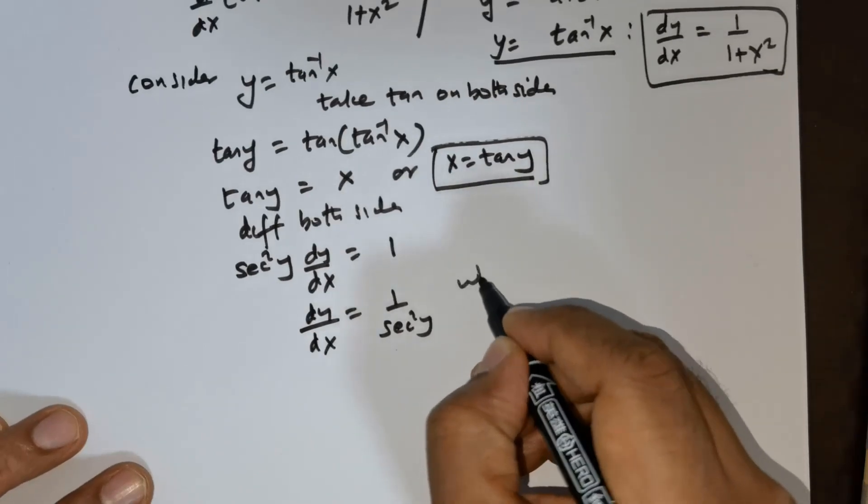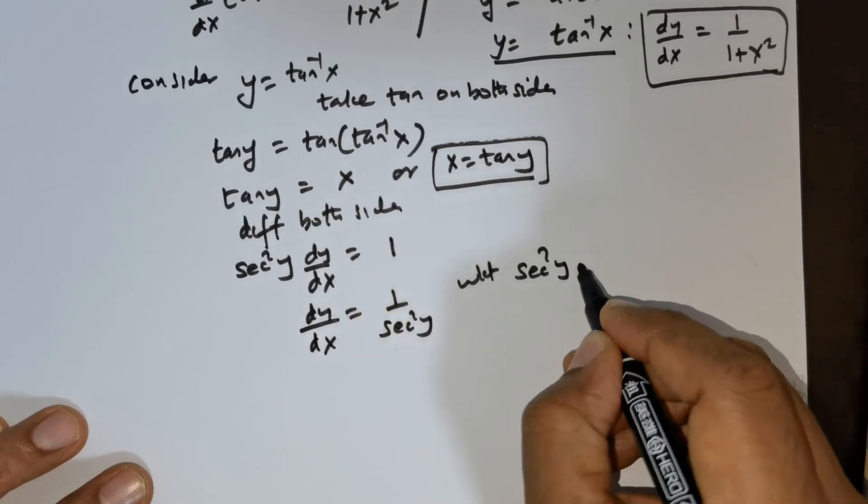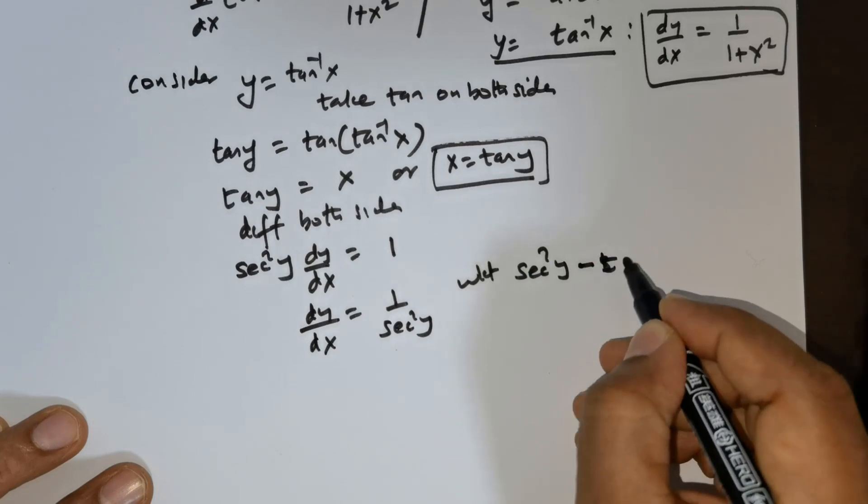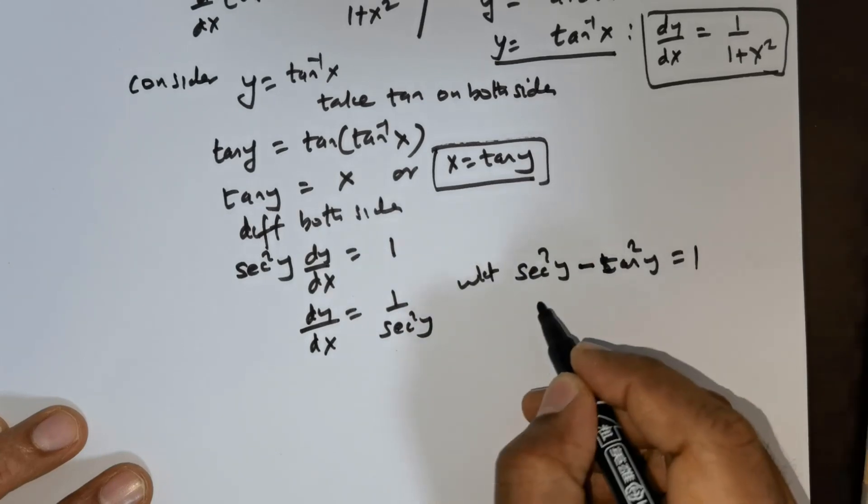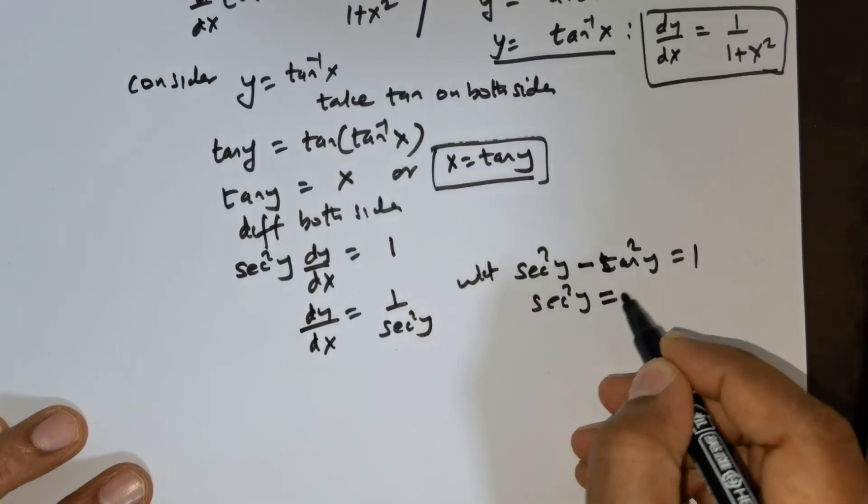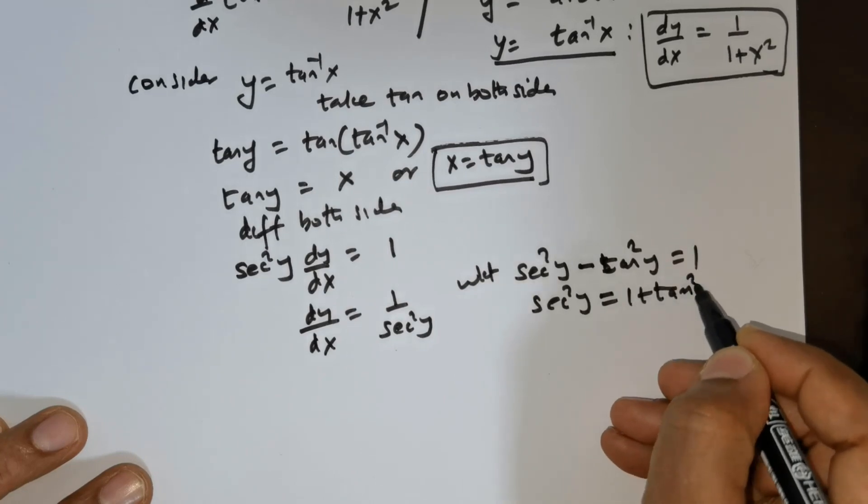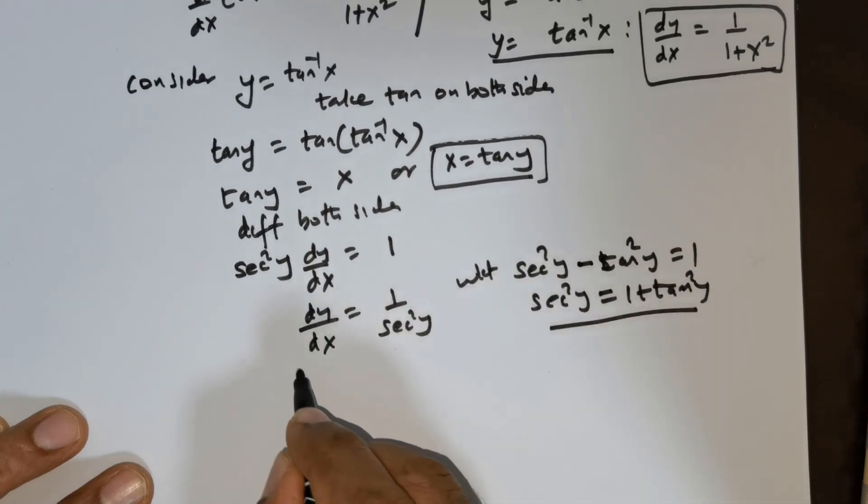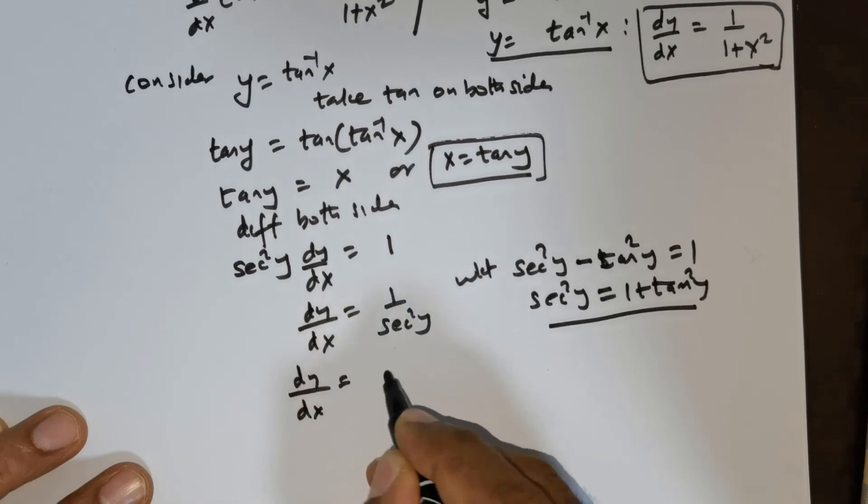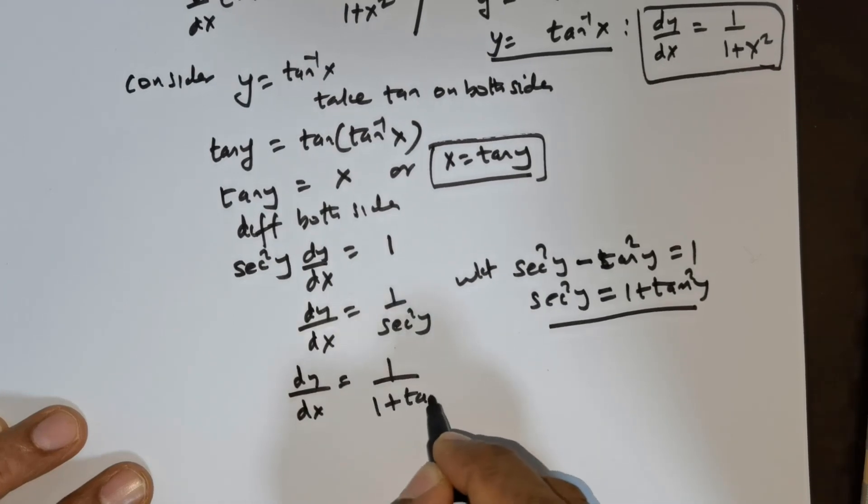Now we know an important trigonometric identity, that is secant squared y minus tan squared y is equal to 1. So from here I can write secant squared y is equal to 1 plus tan squared y. So I can substitute that. So dy/dx is equal to 1 over 1 plus tan squared y.